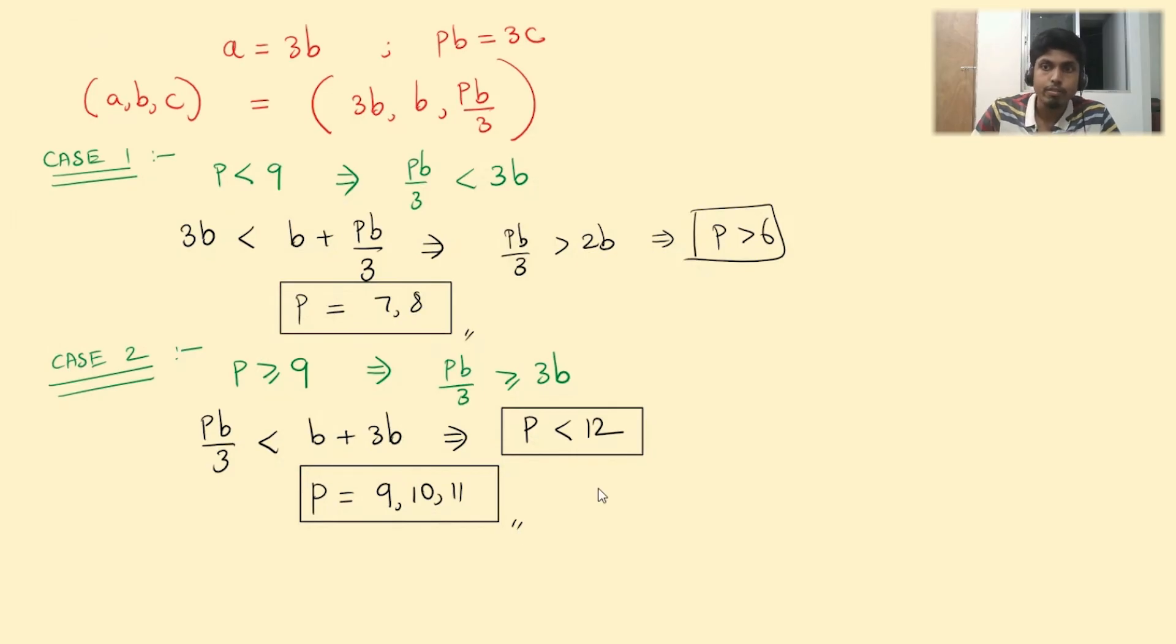So hence, there are 5 possible values of p, namely 7, 8, 9, 10 and 11. So 5 is the answer.